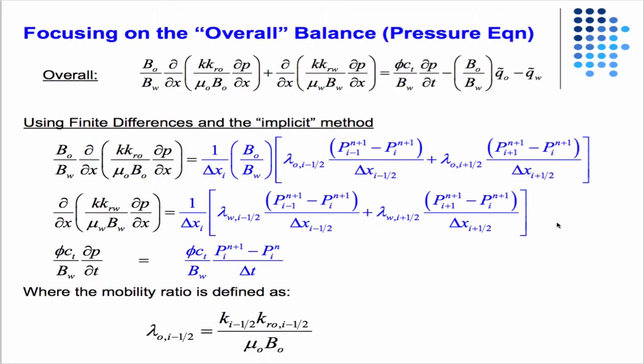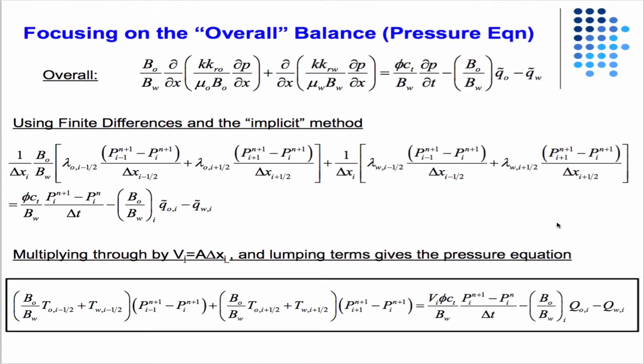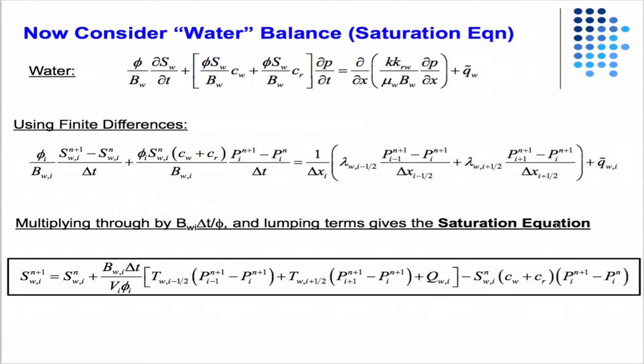Just to make the equation more compact, we introduce this mobility ratio. We multiply through by this term and we get something that looks very much like what we're used to for the overall mass balance. It's just now the transmissibilities include contributions from oil and water. Everything's implicit, all the pressures are evaluated at the n+1 time step.